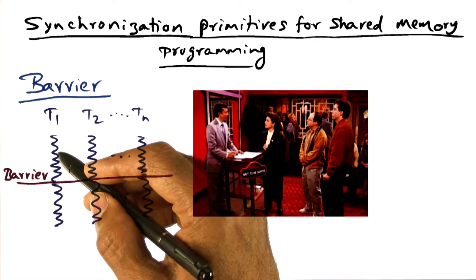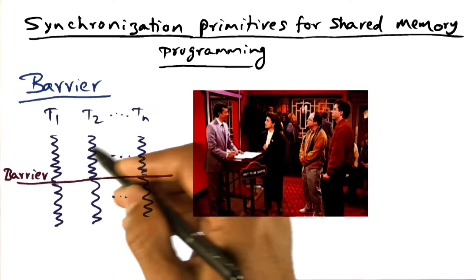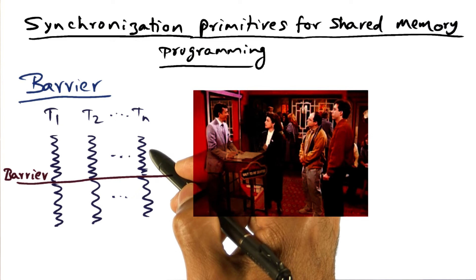That's the same thing that's happening with barrier synchronization. It is possible that thread T1 and T2 arrive at the barrier, meaning that they've completed their portion of the work. They've gotten to this barrier, but there are other threads that are lagging behind.